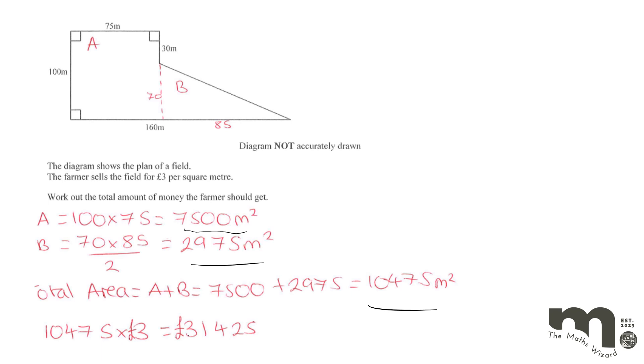And then all we've got to do is times that by that three pounds, and that will tell you that he's going to make £31,425 from selling his field, because he's getting three pounds for every square meter, for each one square meter.